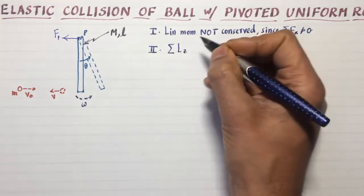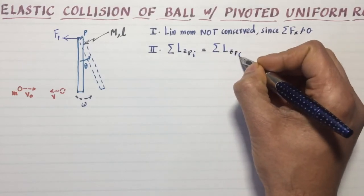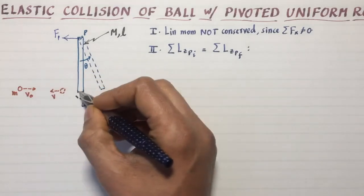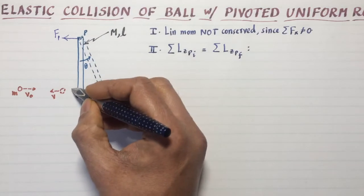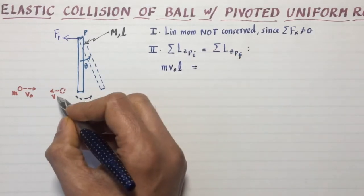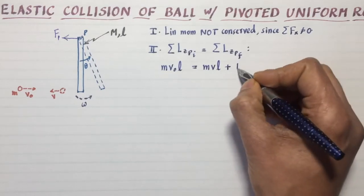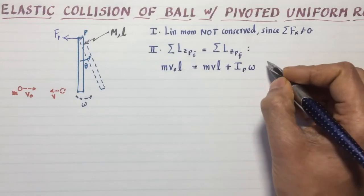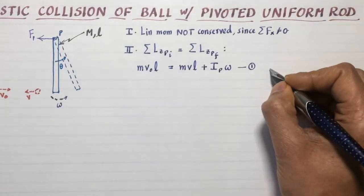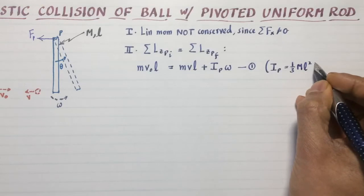The sum of the initial angular momentum in the z direction about the pivot point equals the sum of the angular momenta in the z direction about the pivot point final. The angular momentum of the ball coming in is the linear momentum, MV, times this distance L times sine of 90 degrees. So that's MVnot L coming in equals MVL at the end plus the moment of inertia of the rod times omega. Let's call this equation one. I should note that Ip is just one-third ML squared from your table of moments of inertia.